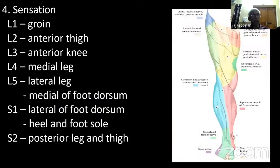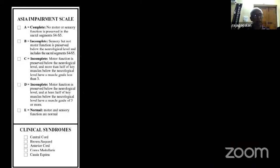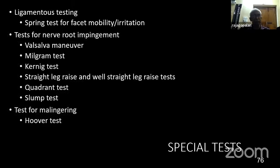Regarding sensations — learn to remember dermatomes rather than from Magita charts. The ASIA Impairment Scale is not a part of clinical examination, but you should know how to grade it. Then comes testing for nerve root impingement or nerve root irritation.